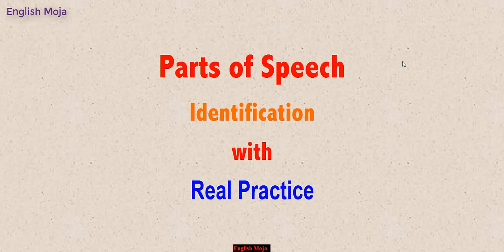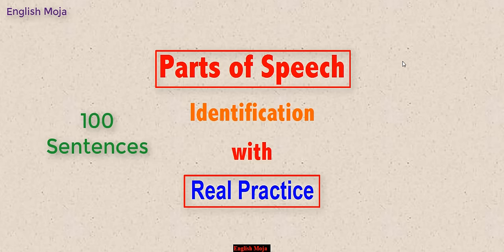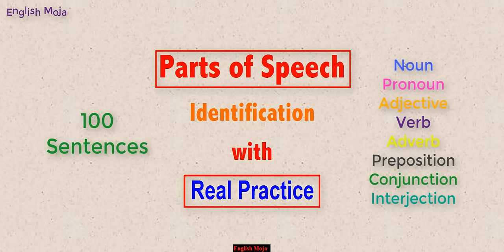Obviously, you have to use English sentences. Which parts of speech can be identified? Parts of speech is identification with real practice. Let's look at a sentence and see which part of speech each word is. The parts of speech include: noun, pronoun, adjective, verb, preposition, and conjunction.